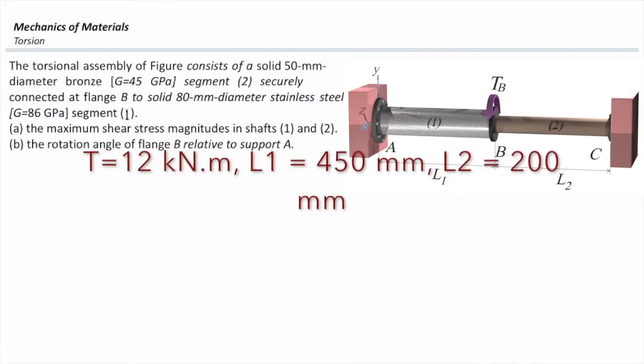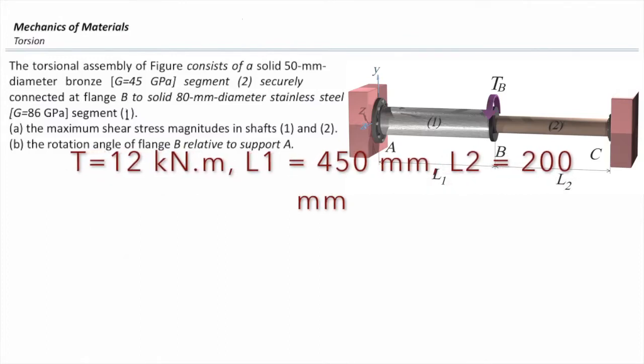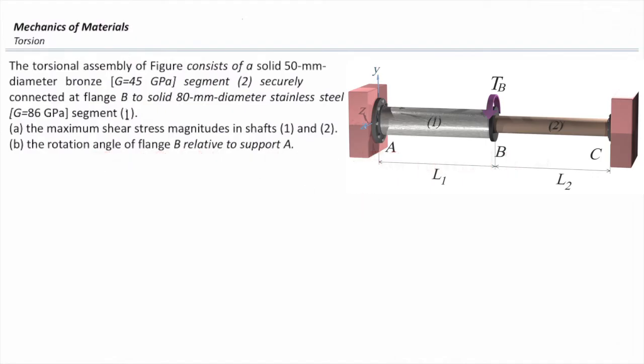The torsional assembly shown in this figure consists of a solid 50 mm diameter bronze segment number 2 on the right. The modular rigidity is 45 GPa, and that is secured to flange B.